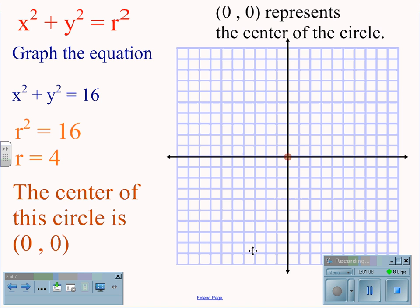So the first thing we do is identify the center of the circle at 0, 0, the origin. We then count out the radius at 4 points to the right, 4 points above, 4 points to the left, and 4 points below the origin. And then we can draw the circle around that radius. This is the circle for the equation x squared plus y squared equals 16.